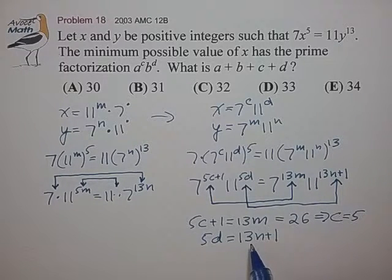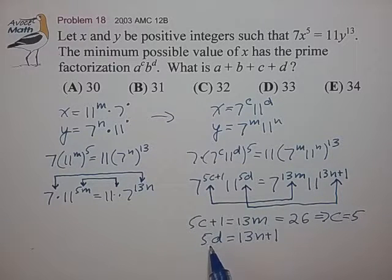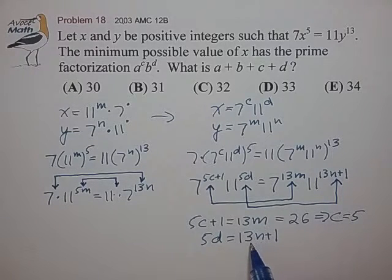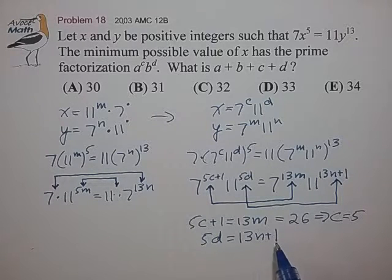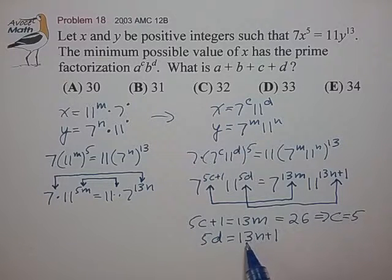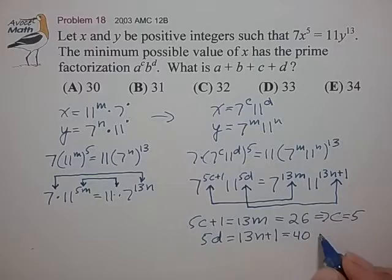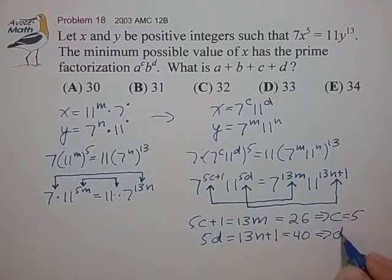Now here we're trying to find some multiple of 13 such that when you add 1 you have a multiple of 5. So let's try 1: 13 + 1 = 14, no. 2: 26 + 1 = 27, no. n = 3 times 13 is 39 + 1, okay that does work. And that leads to a value of d equals 8.